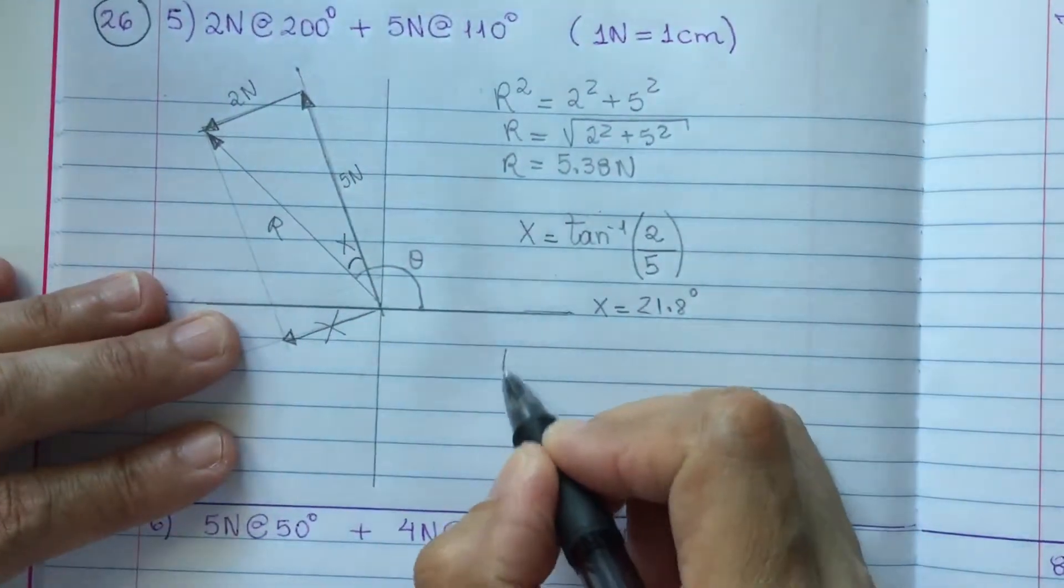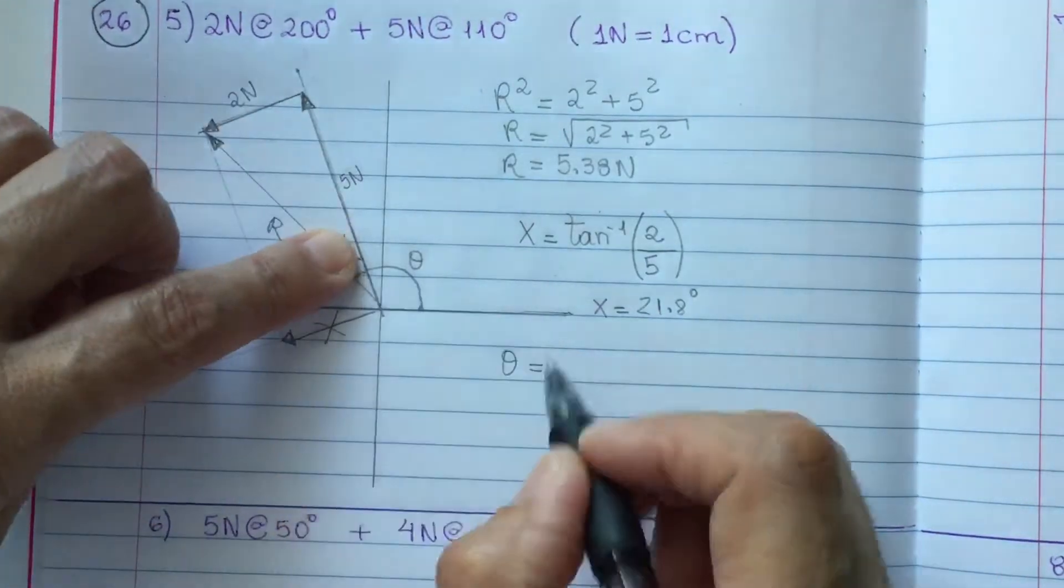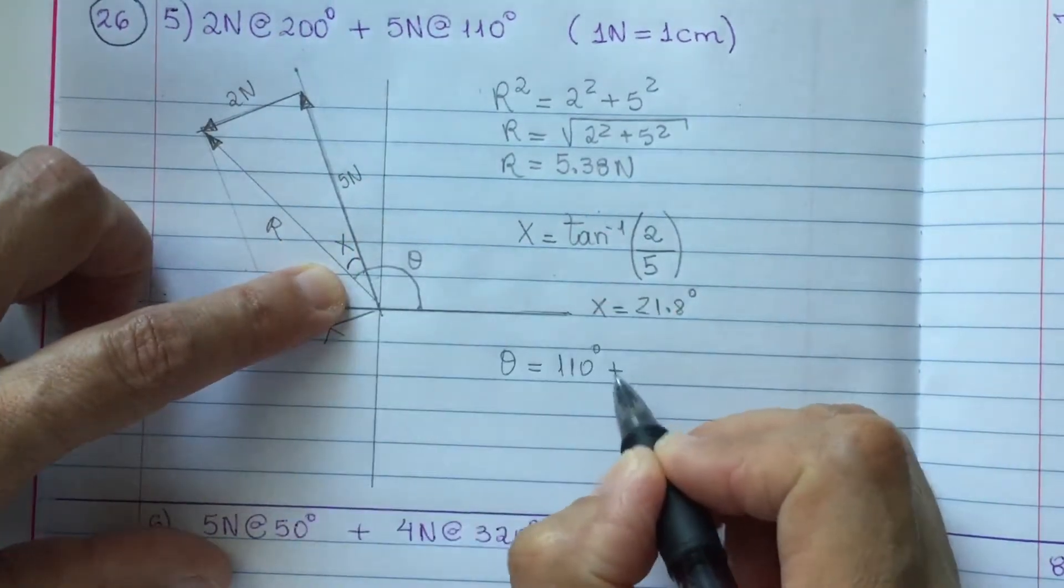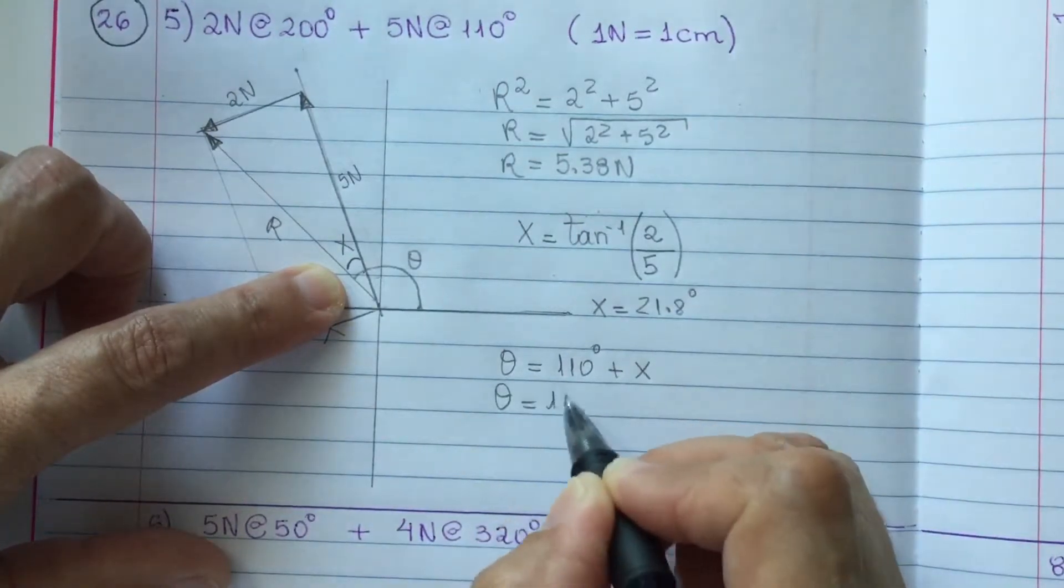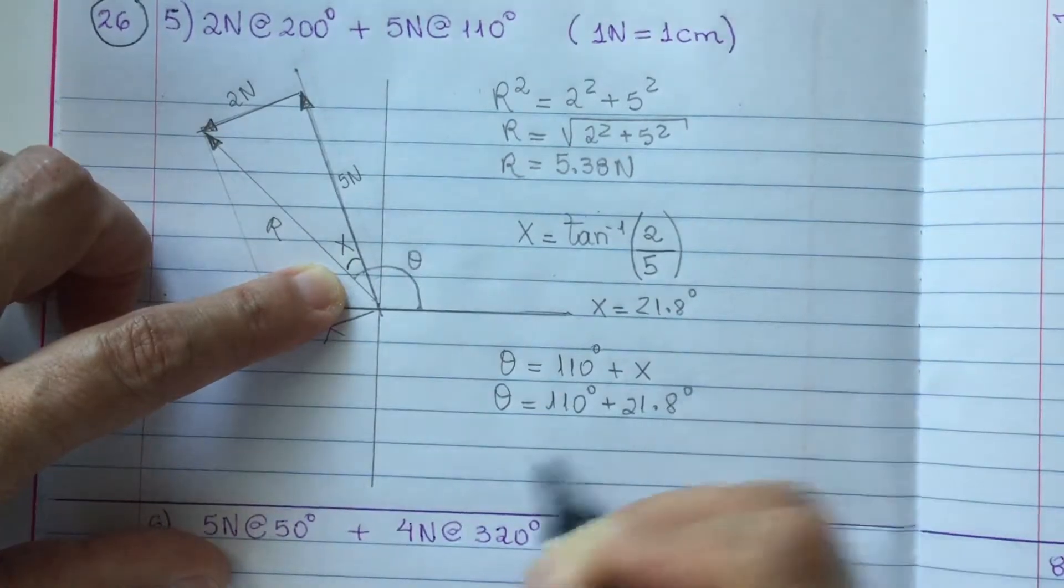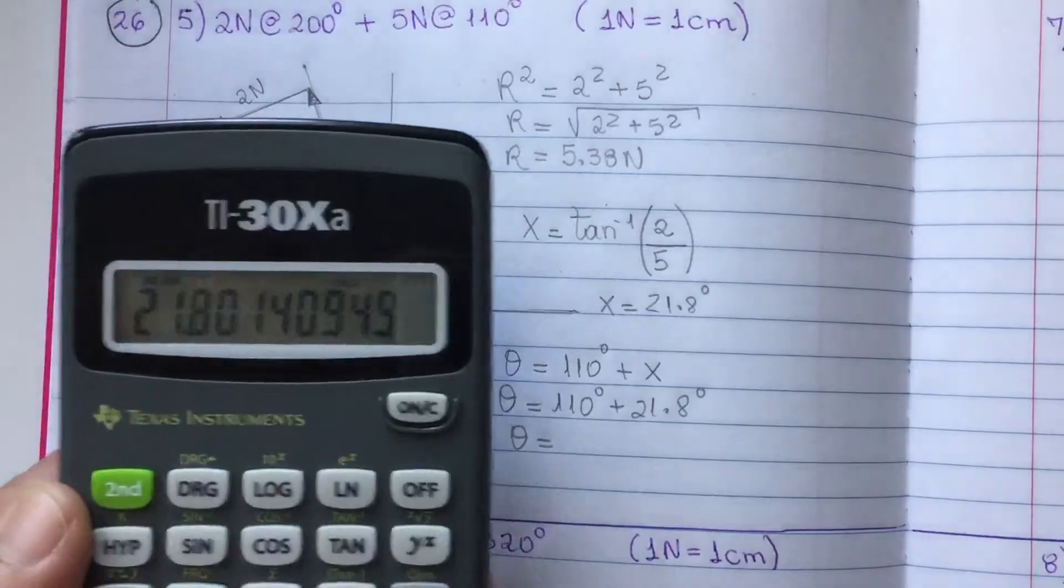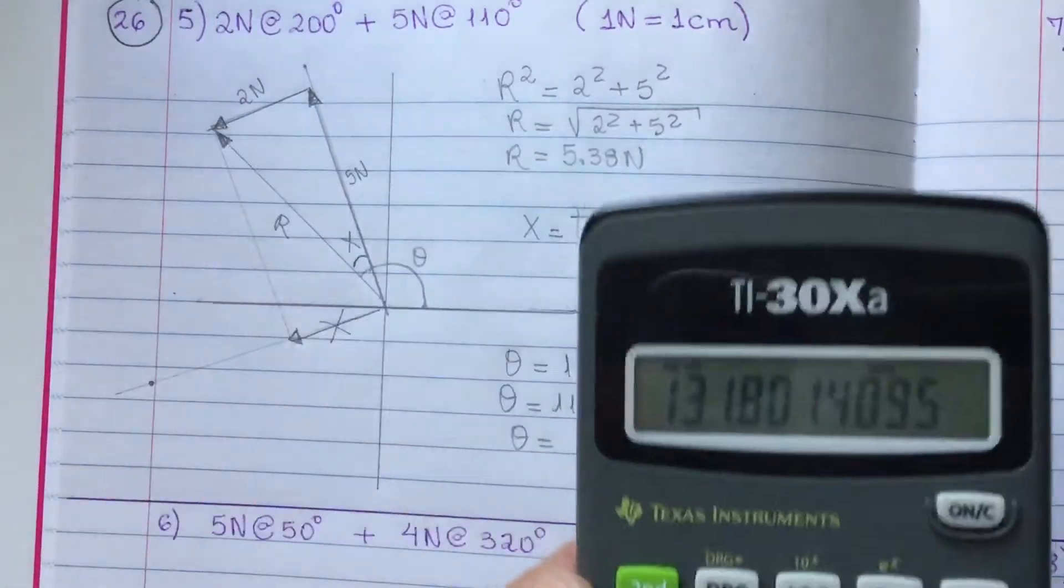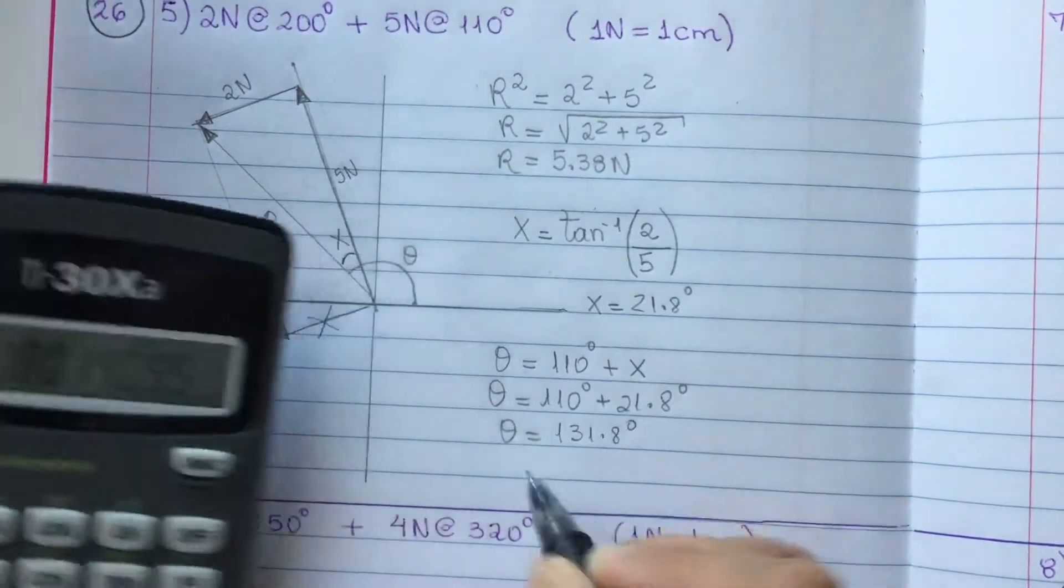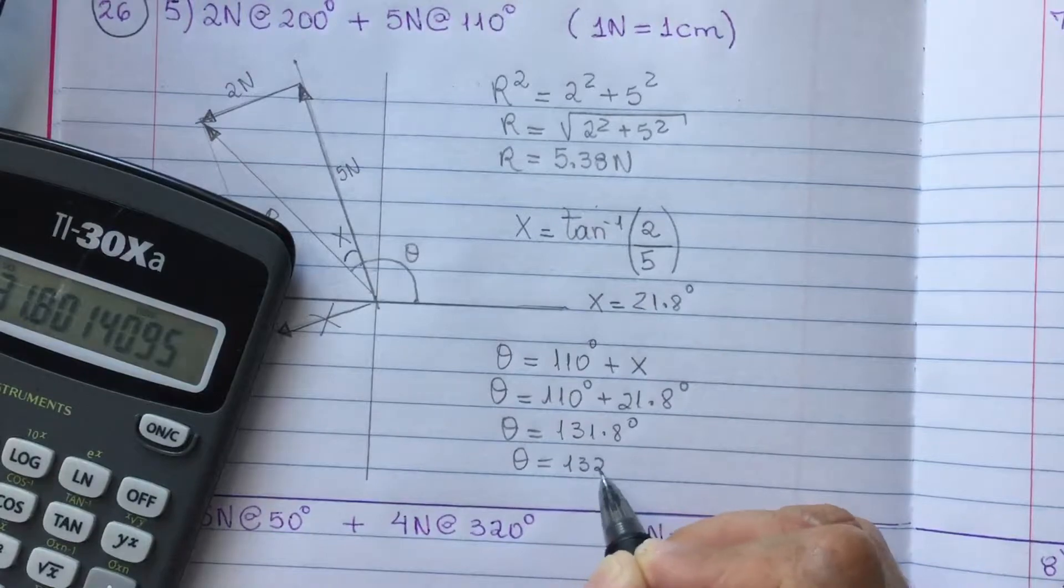Now, my theta is the location of this, which is 110 degrees plus X. My theta is 110 plus 21.8 degrees. So, my theta is 131.8 degrees or you could round to 132 degrees.